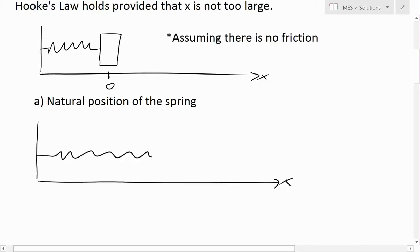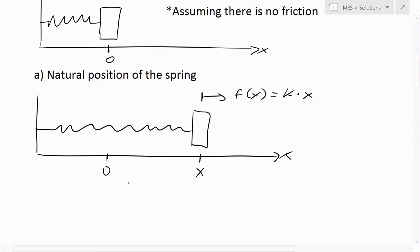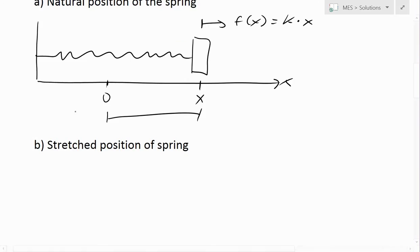So if this was the natural position here, now we have a new position x, and the force required to push it at this point is always going to be f(x) equals k, that constant, times by the x, the distance from its natural zero position.